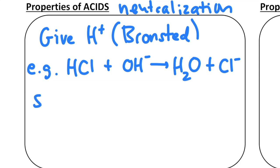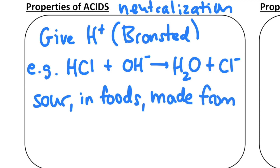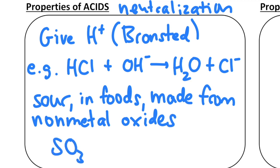Some properties of acids: they are sour, they're in foods, and they are made from non-metal oxides. For example, if I have sulfur trioxide, that's a non-metal oxide, you can simply bubble that into a beaker of water and you'll get a synthesis reaction, which will create a common acid known as sulfuric acid.